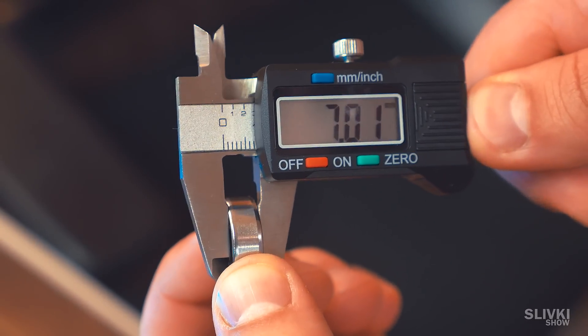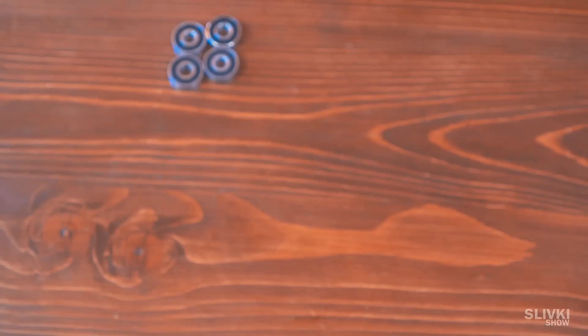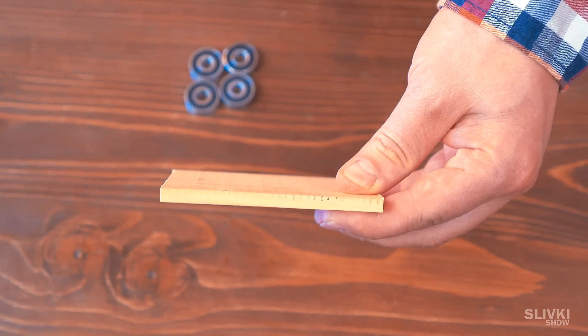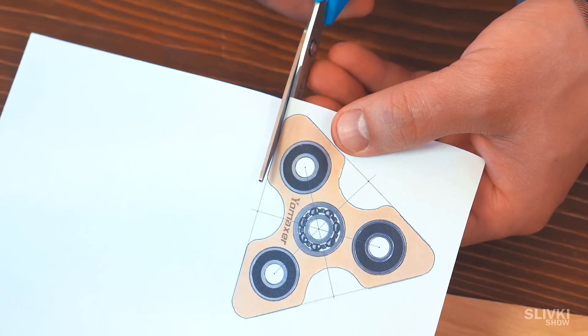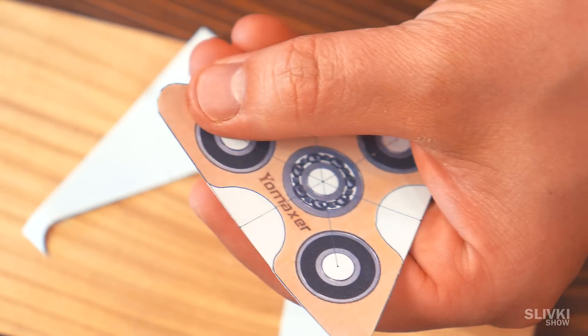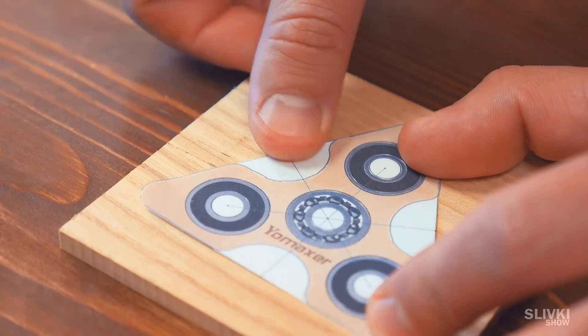The thickness of bearings were 7 millimeters and that's why we should find a board almost the same thickness. Carefully cut corners of spinner and stick it to that thing with tape.